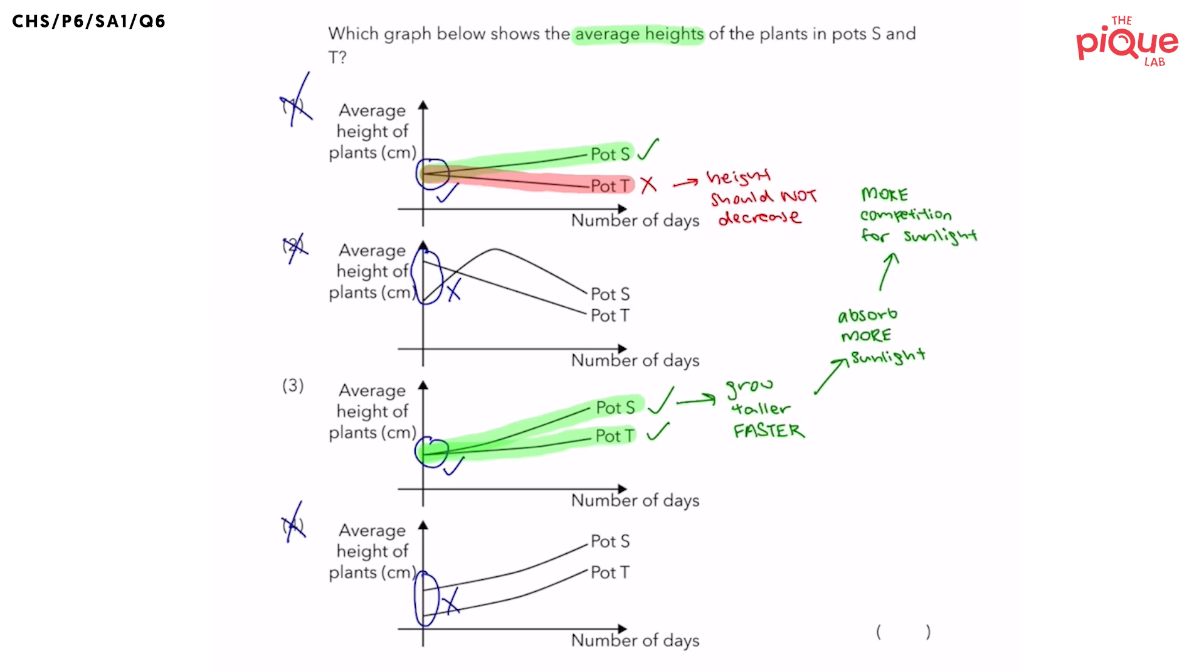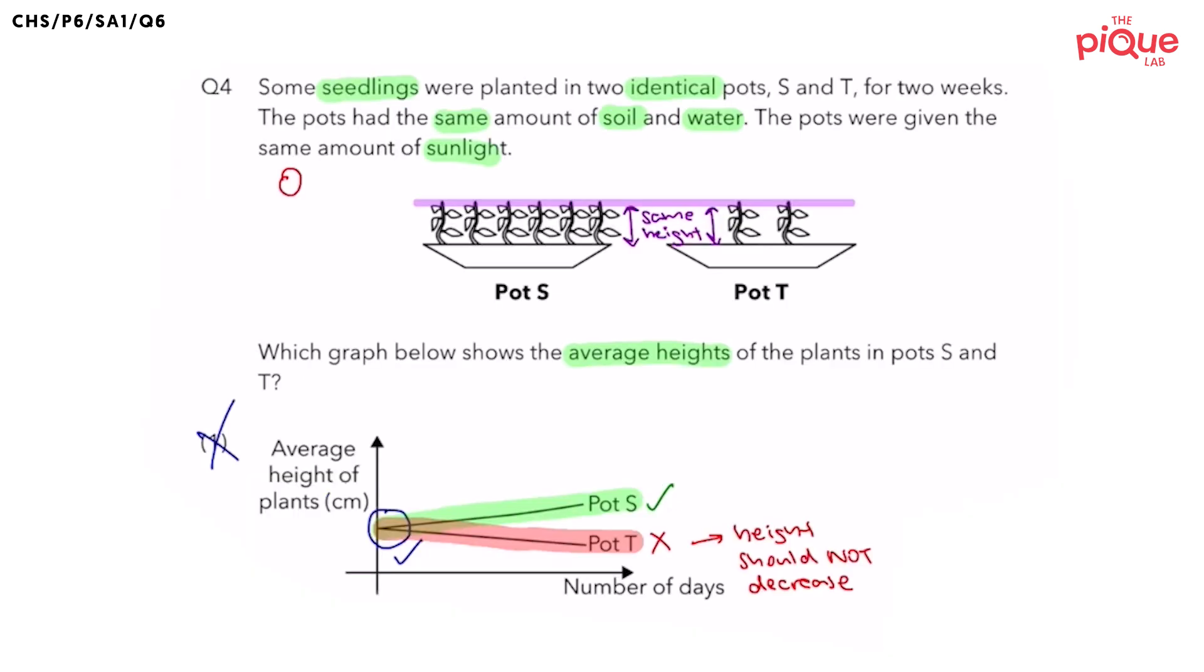So why is this the case? If we look at our diagram over here, if one of the plants in pot S were to grow a little bit taller, what do you think would happen to the plant next to it?